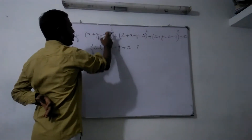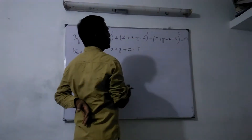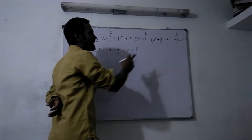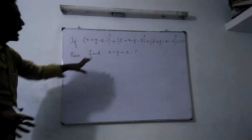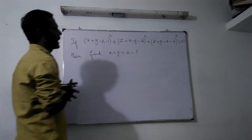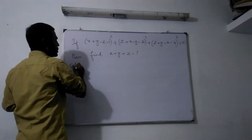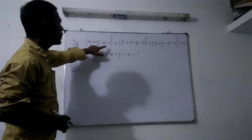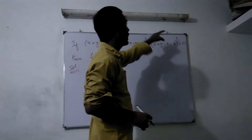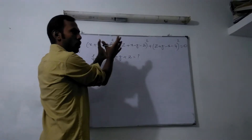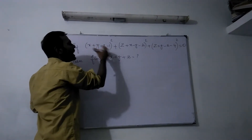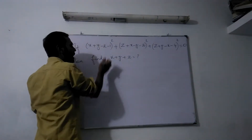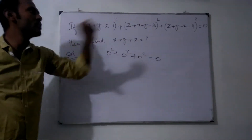x plus y minus z minus 1 whole square plus z plus x minus y minus 2 whole square plus z plus y minus x minus 4 whole square is equal to 0. Since each term is a perfect square and their sum equals zero, each individual square must equal zero.